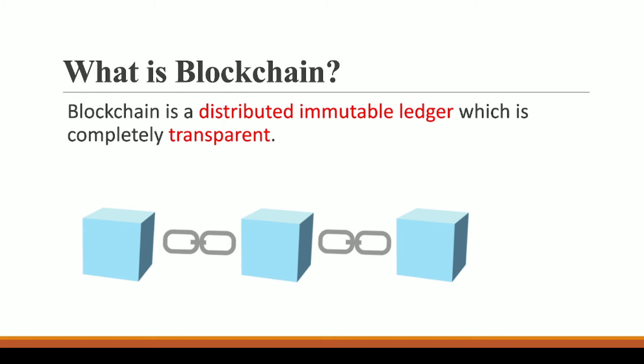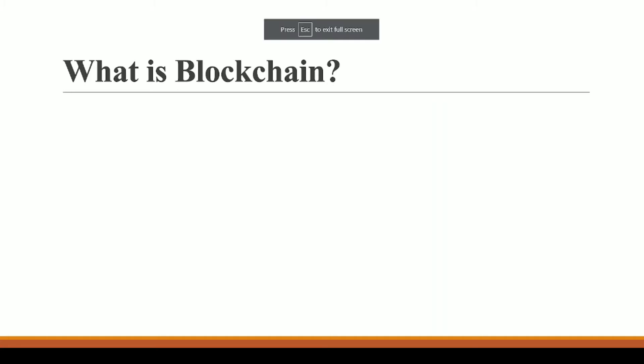Let us understand the meaning of this definition — the meaning of each keyword: ledger, immutable, distributed, and transparent. I will start from ledger, then immutable, then distributed, and then transparent. So let's talk about what is a ledger.